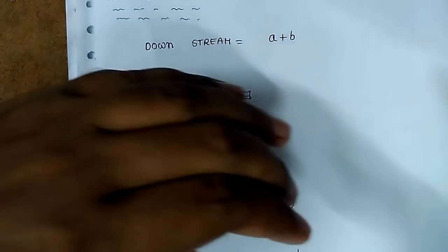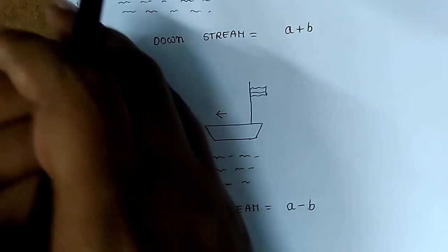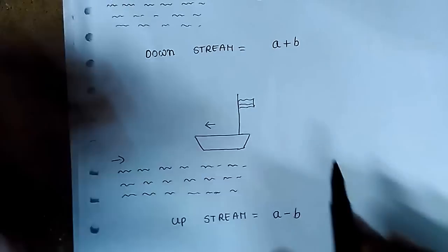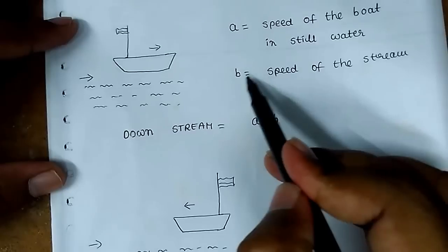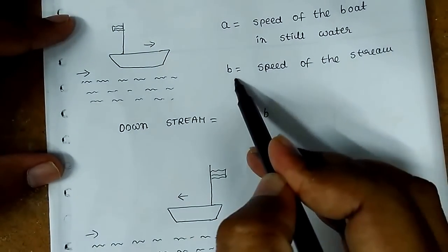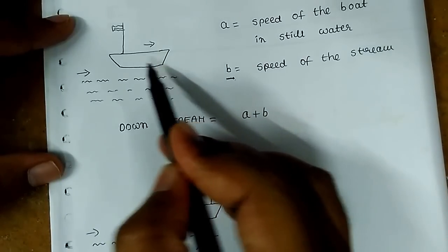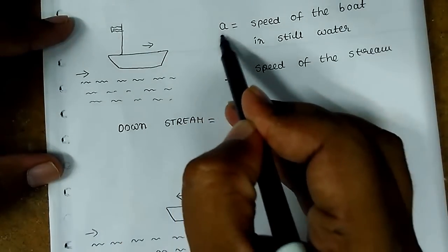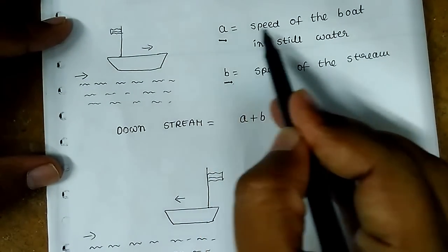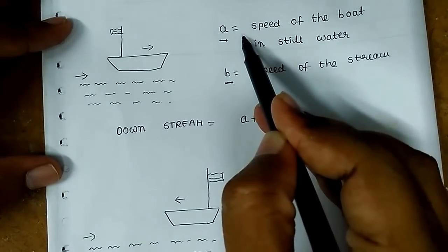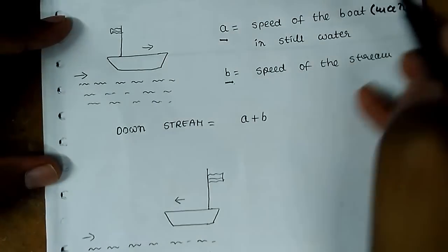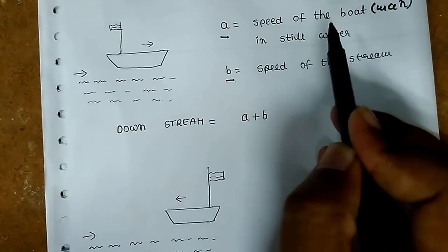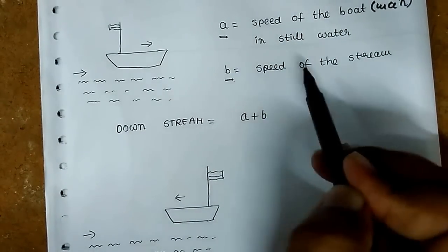This is the speed of the stream and the speed of the stream. This stream is B. The boat is speed. The human is speed of the man. Speed of the boat in still water is very important. So A is speed of the boat or man in still water.